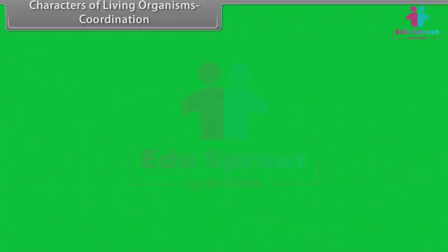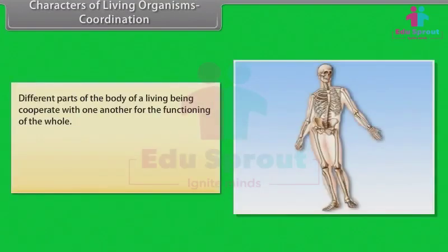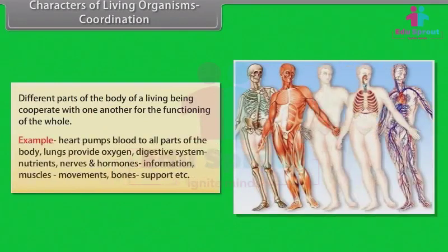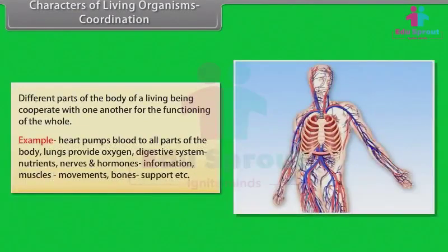Coordination: Different parts of the body of a living being cooperate with one another for the functioning of the whole. For example, heart pumps blood to all parts of the body, lungs provide oxygen, digestive system provides nutrients, nerves and hormones provide information, muscles provide movements, and bones provide support.